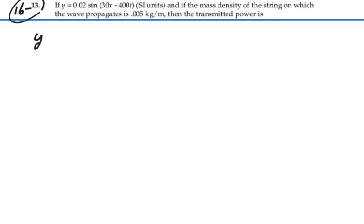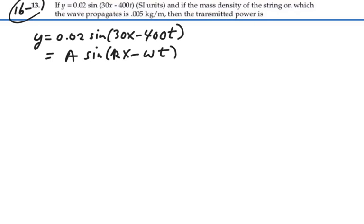Here's our wave function, y is equal to 0.02 sine 30x minus 400t. This is of the form A sine kx minus omega t. Omega is 400, k is 30, and amplitude is 0.02. So we have all those.